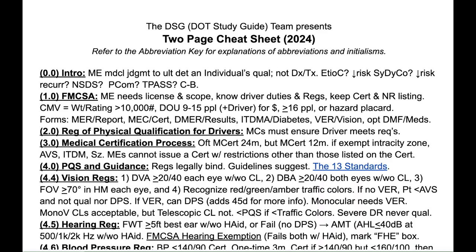Section 1.0, FMCSA. With the medical examiner, there are six basic things that the medical examiner must have to perform physical exams for DOT drivers: they need their license and a scope of practice allowing them to perform physical examinations, they need to know the driver duties and the regulations, and they need to maintain their certification and national registry listing. A commercial motor vehicle either has a weight or rating greater than 10,000 pounds, or is designed or utilized to carry 9 to 15 passengers — including the driver — for compensation, or 16 or more passengers regardless of compensation.